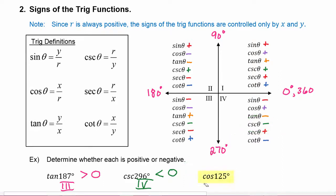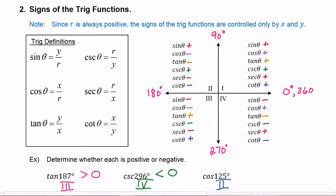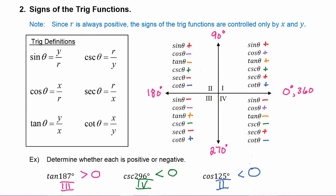Next, we have cosine of 125 degrees. 125 degrees is in quadrant two, and in quadrant two, cosine is going to be negative.